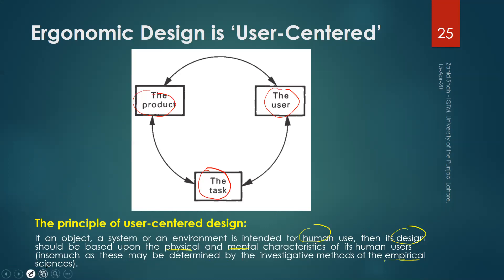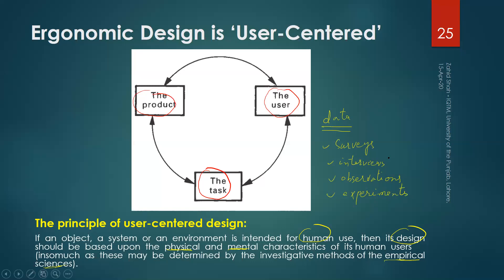That simply means you may have to get data about the users through, for example, surveys, interviews, simple observations, or sometimes experiments. Your knowledge of design of experiments will also be discussed somewhere in this course. Empirical means you need real data using surveys, interviews, observations, and experiments, so that the design is actually user-centered.